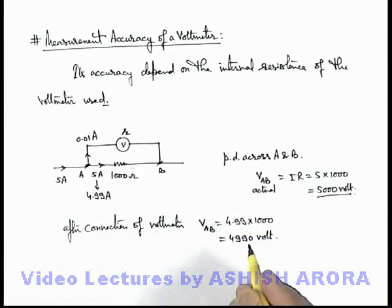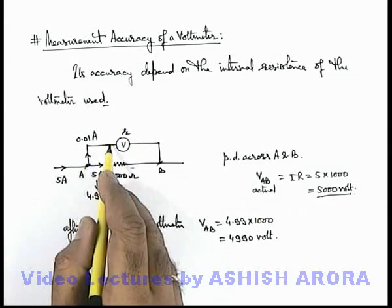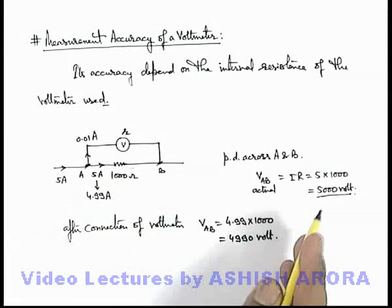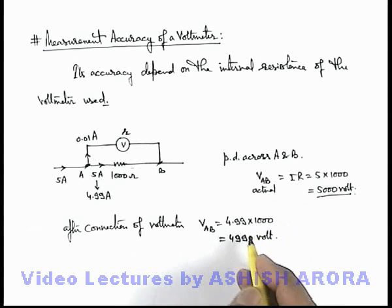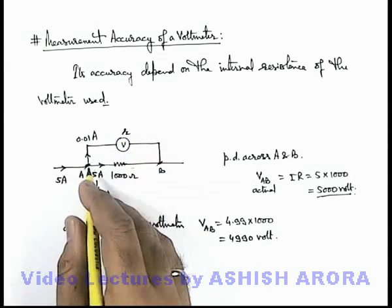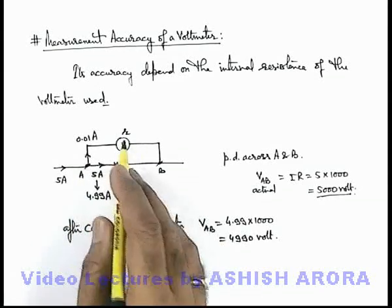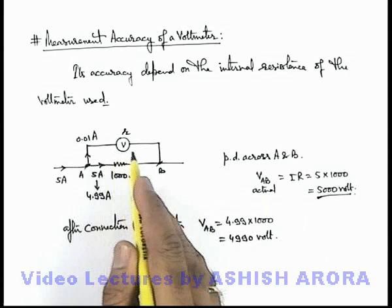If the resistance of the voltmeter is less, the current drawn by it will be more, and the current passing through the 1000 ohm resistor will be further reduced, making the reading relatively less accurate. So for precise measurement of potential difference, the voltmeter resistance should ideally be infinite so that it draws no current, and the measured potential difference would ideally be 5000 volts. But as discussed, without drawing current a deflection type meter can never give any reading.